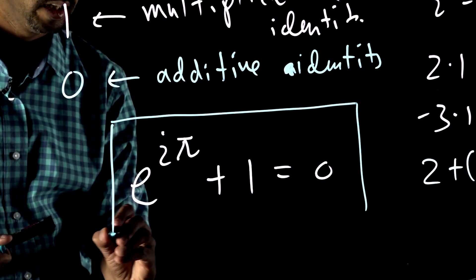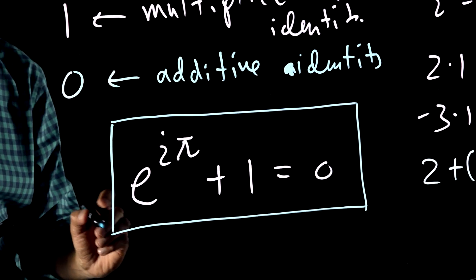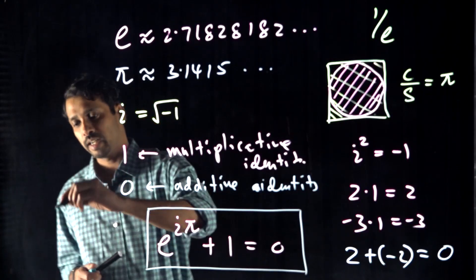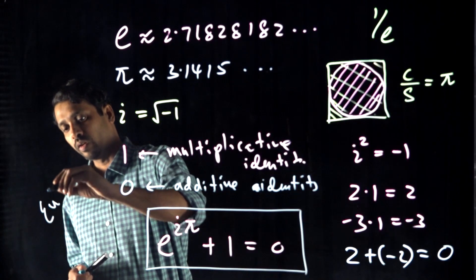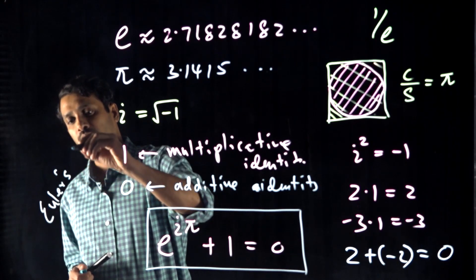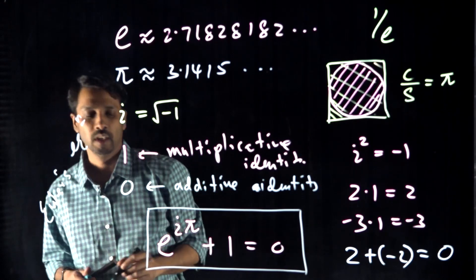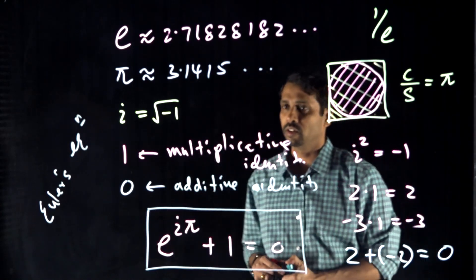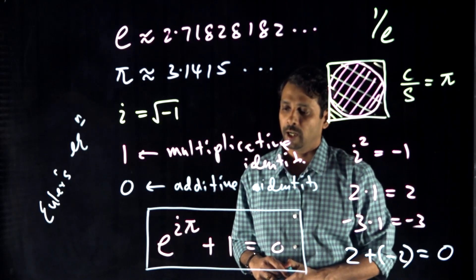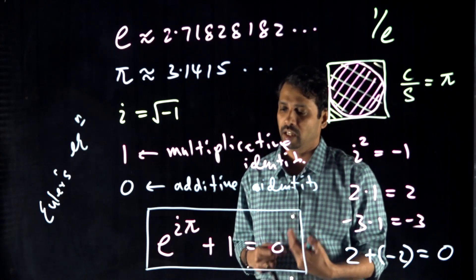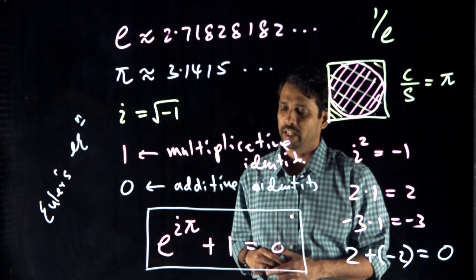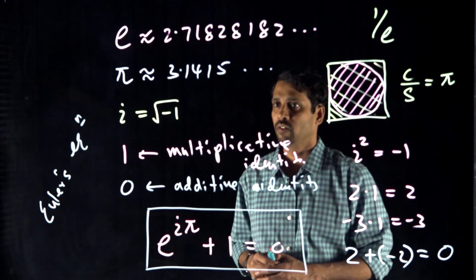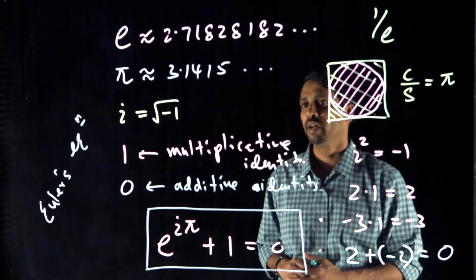This equation is called Euler's equation. Euler's equation is a result of what we call Euler's identity. When you evaluate the identity at pi, you end up getting this equation. So this is what we call the most beautiful equation in mathematics — Euler's equation.